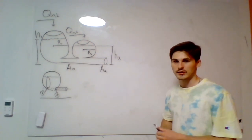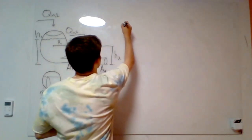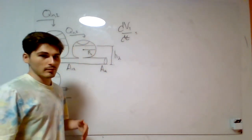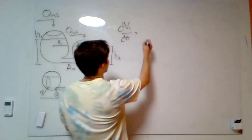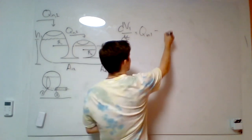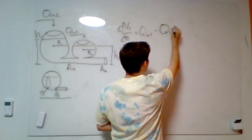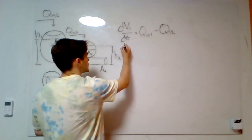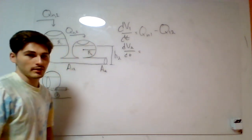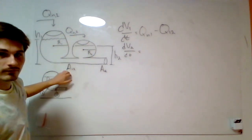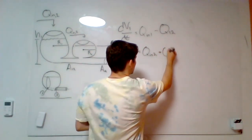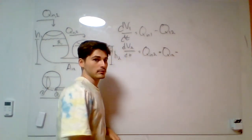To model the changing volumes of the liquids, we write dV1/dt equal to the flow coming into tank 1, Q_in1, minus the flow leaving tank 1, Q12. The changing volume of liquid in tank 2 with respect to time equals the inlet flow Q_in2 plus the flow from tank 1, Q12, minus the flow leaving tank 2.